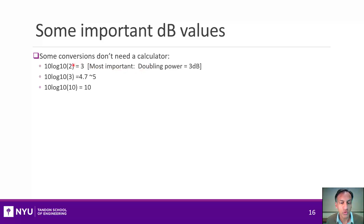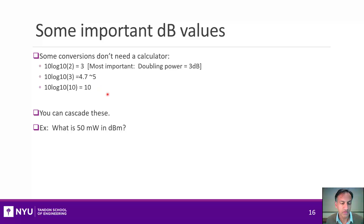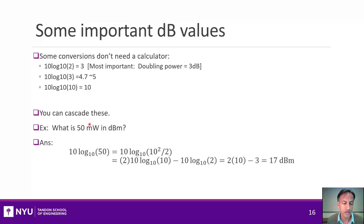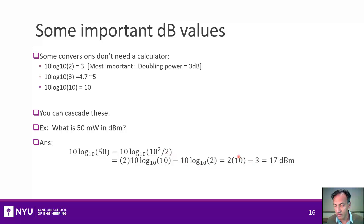Some quick useful conversions: 2, 3, or 10 in linear scale correspond to 3, approximately 5, and 10 in dB scale, and you can cascade these. For example, what is 50 milliwatts in dBm? Write 50 as 10 squared divided by 2. Using the laws of logarithms, that is 2 times whatever 10 is in dB — which is 10 — minus whatever 2 is — which is 3. So it's 20 minus 3, or 17 dBm, without even using a calculator.